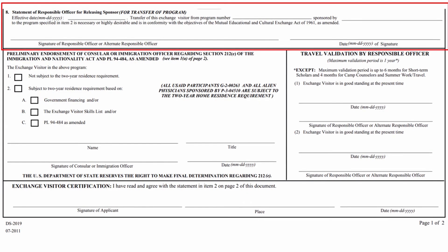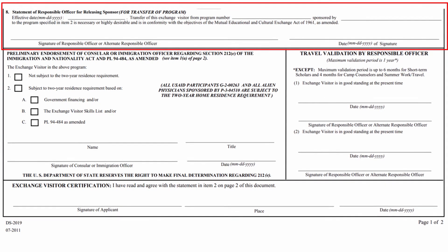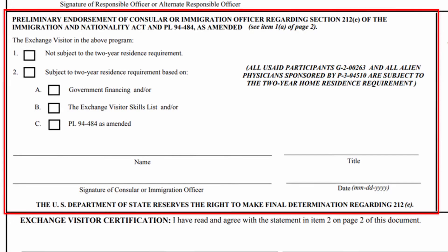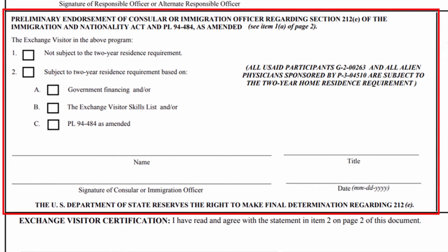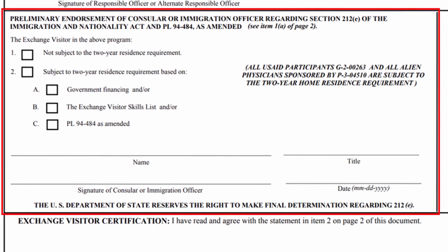Block 8 is completed by a J-1 responsible officer whenever a transfer of your J-1 program occurs. The section to the left describes if you are subject to the two-year home residency requirement and would contain the name, signature, and date of a U.S. consular officer or immigration officer.